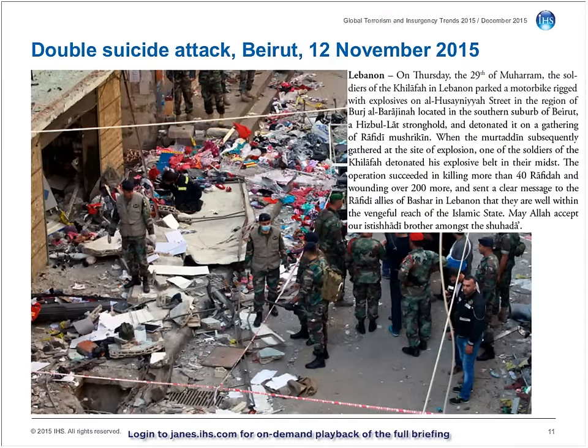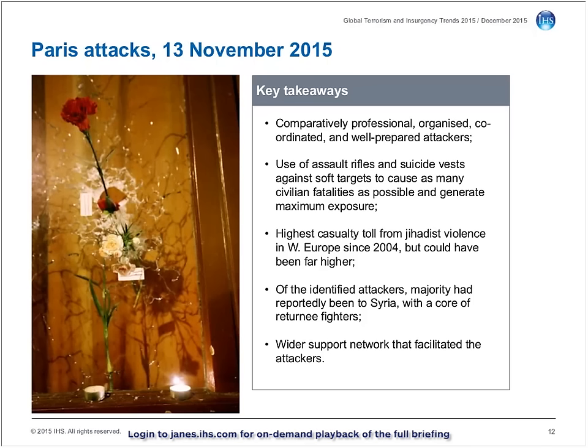Less than a fortnight after the downing of the Metrojet aircraft, two Islamic State suicide bombers killed more than 40 people in a Shia district of Beirut. The sizeable death toll in the Beirut bombings was overshadowed the following day by the scale and nature of the series of attacks conducted in the French capital Paris. Of the seven attackers identified so far, six have been reported as having been in Syria at some point over the past several years, likely fighting for or alongside the Islamic State, before subsequently returning to Western Europe. In conjunction with the direct Islamic State claim of responsibility, the attack appears to have been a centrally directed operation conducted by a corps of returnee foreign fighters.